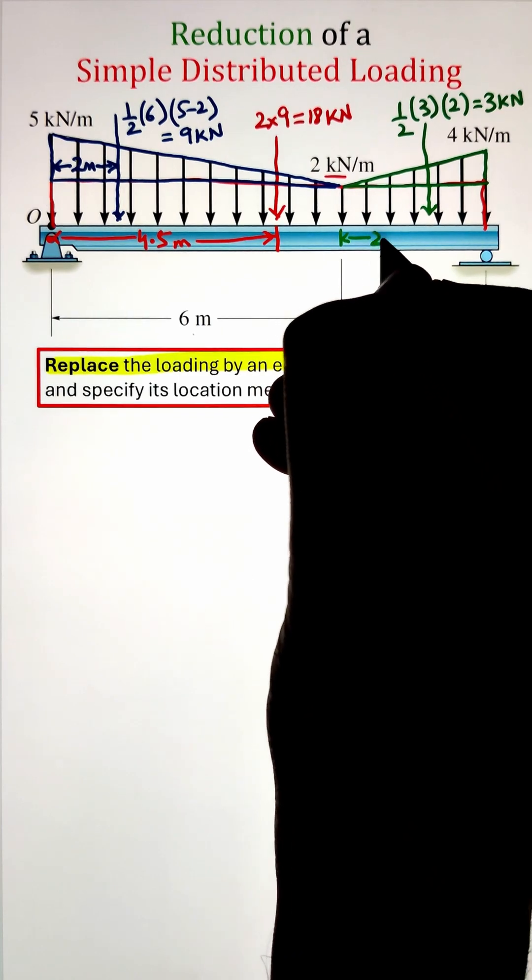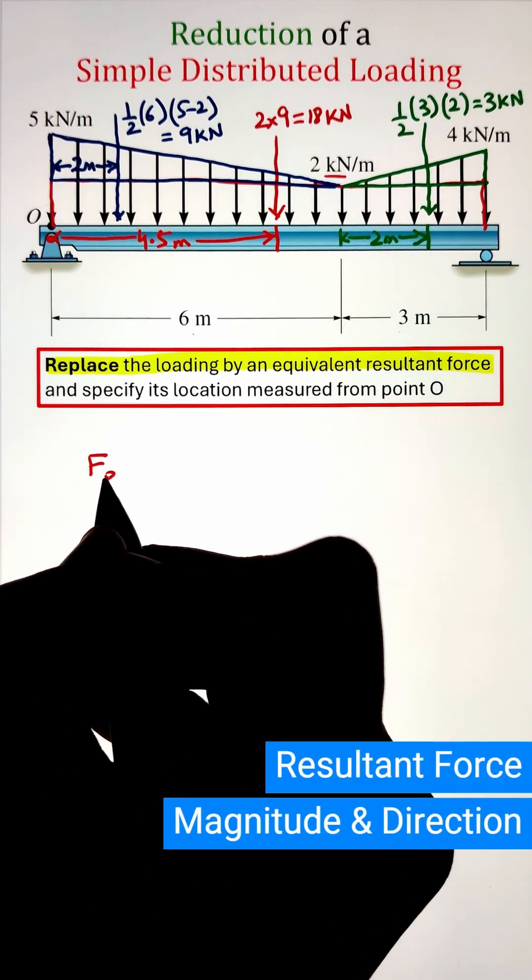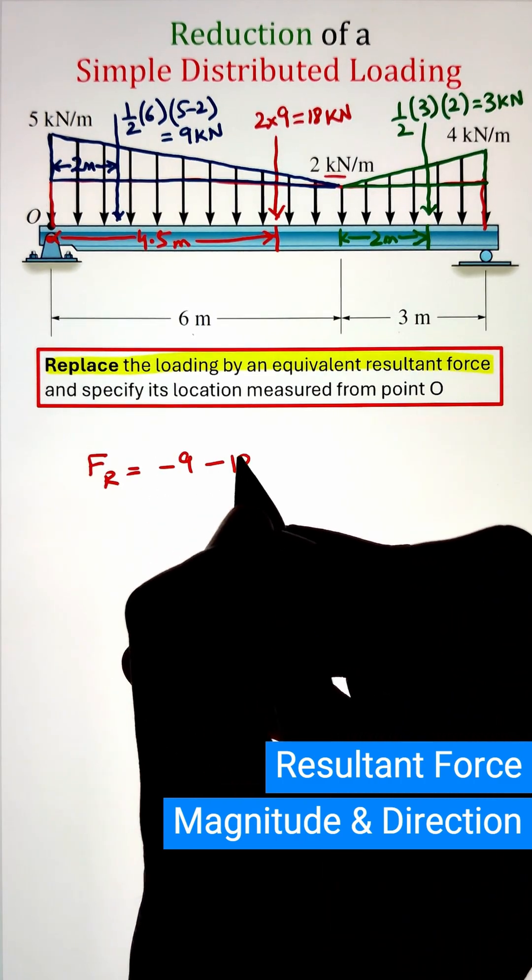Now, this point load is acting again at the centroid that from the lower end is measured by two thirds of the base. That's why it equals to two meters.